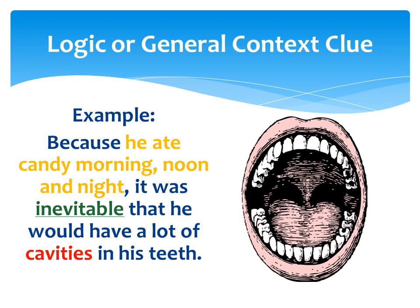Because he ate candy morning, noon, and night, it was inevitable that he would have a lot of cavities in his teeth. It would take the reader's background experience to know that eating candy morning, noon, and night would be bad for your teeth. A reader would realize that a person who indulges in eating candy that often is certain to get cavities — it was bound to happen. By using this process, the reader has discovered the definition of inevitable: an event that's certain or bound to happen.